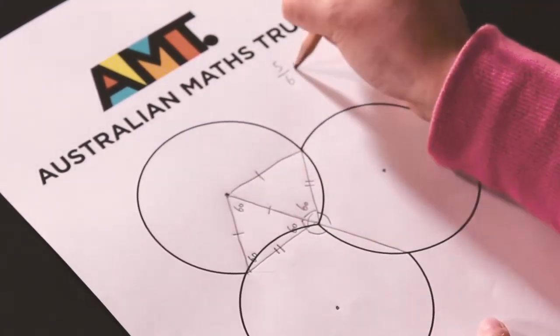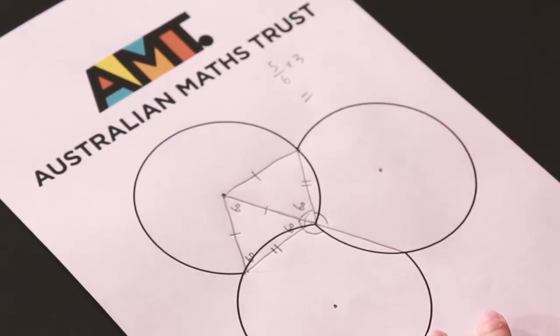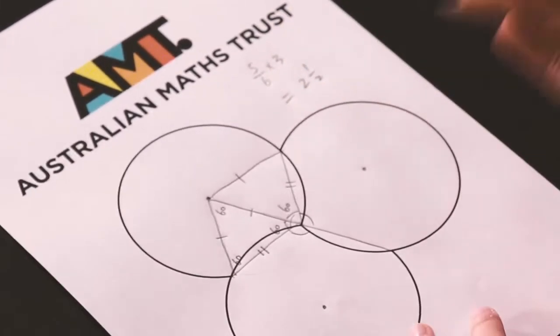Since we have three circles, the total visible arc length is two and a half. Okay, I hope you found that useful. Let us know how we did in the comment section below. You might now want to try the harder version of this problem, and the link and solution are in the description below.